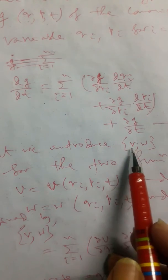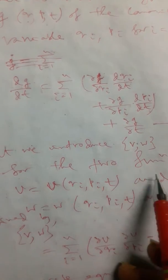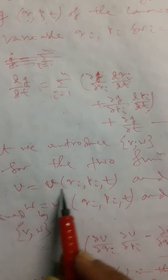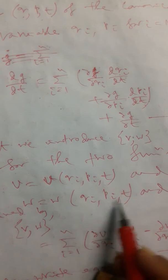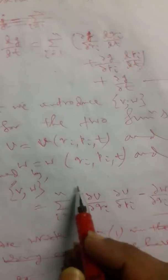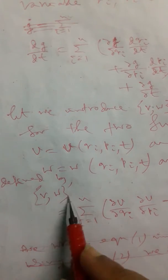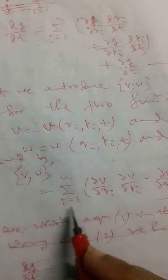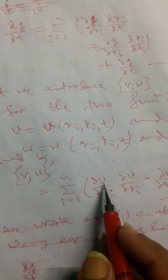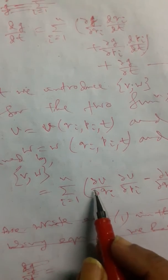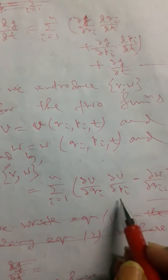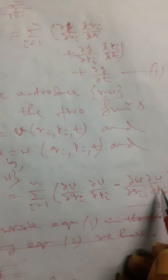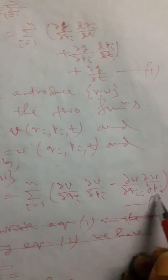Now we introduce another term — the Poisson bracket of v and w — for two functions v and w, both functions of qi, pi, and t. It is defined as: {v, w} equals sum from i equals 1 to n of (∂v/∂qi)(∂w/∂pi) minus (∂w/∂qi)(∂v/∂pi). This is equation number one.